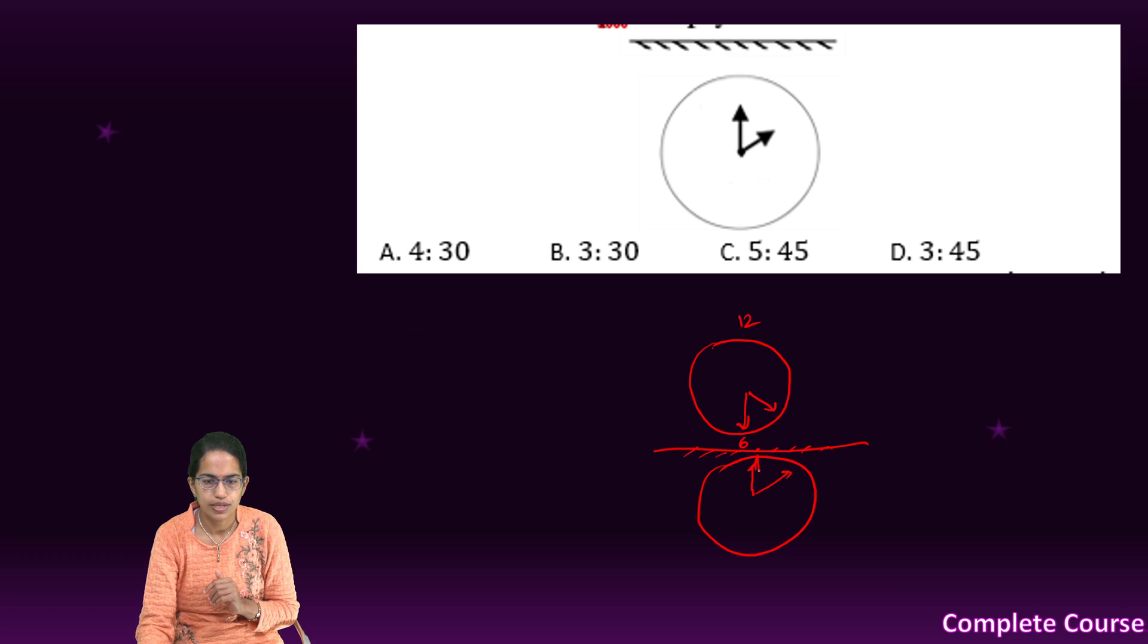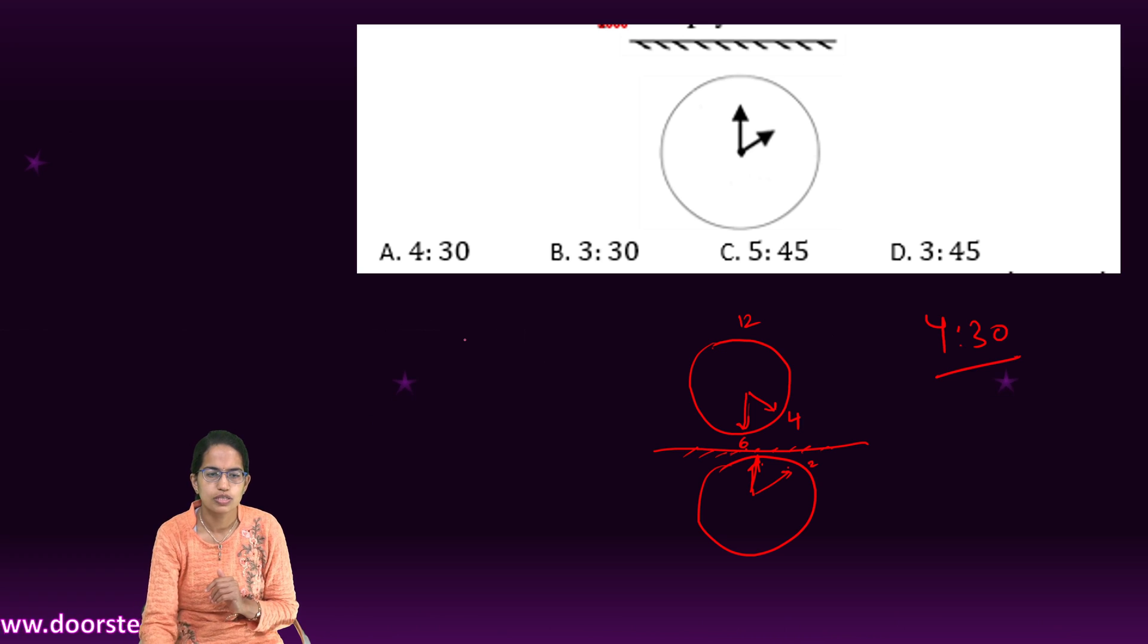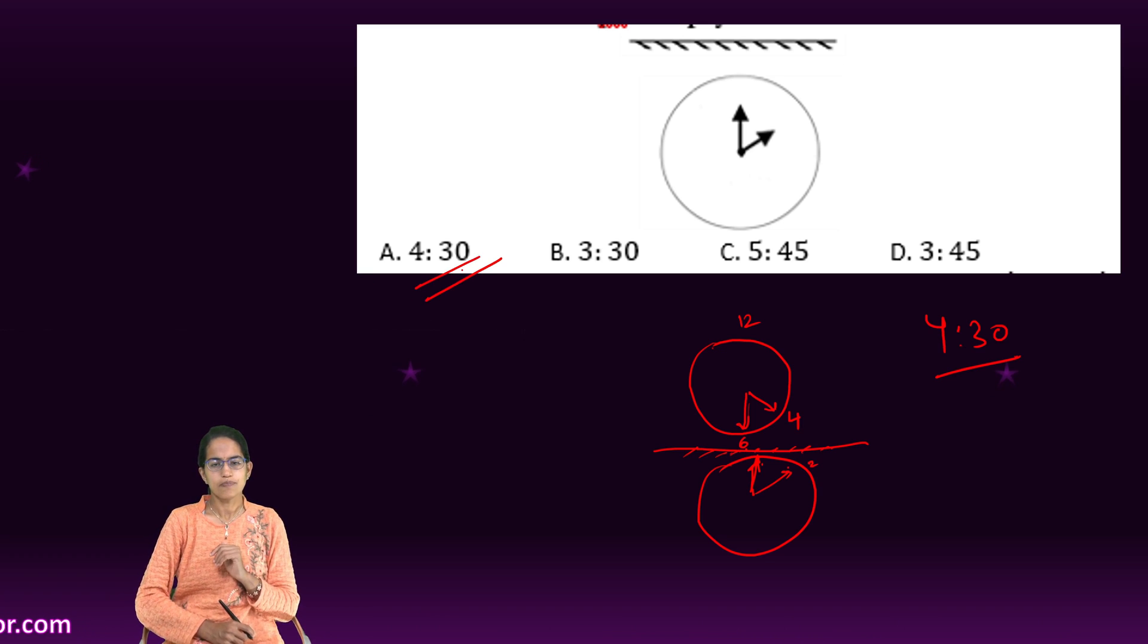So the bigger one is on 12 here. So bigger one is on 6 here. Smaller one was on 2 here. So smaller one is on 4 here. So 4 and 6. So that means 4:30. So this answer would be 4:30. Clear?